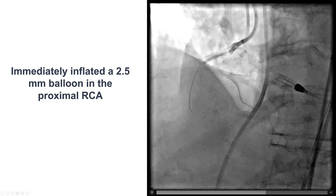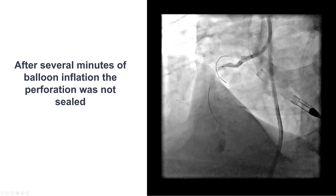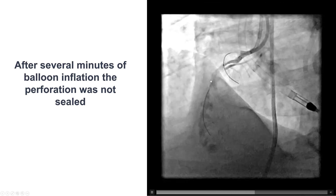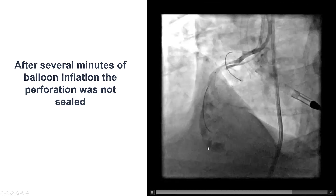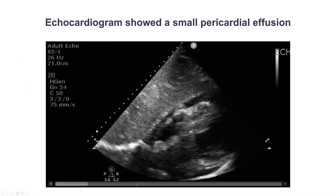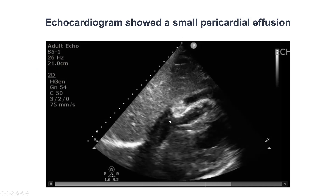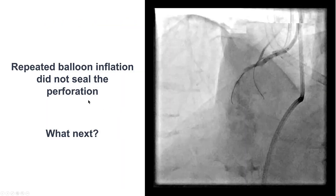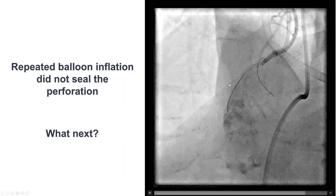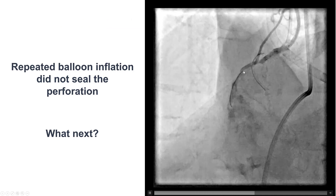Here is the balloon inflated, stopping bleeding into the pericardium. Despite waiting for several minutes, there was still bleeding into the pericardium. An echocardiogram showed a small pericardial effusion. Clearly, we had not succeeded in sealing it and needed to do something more.